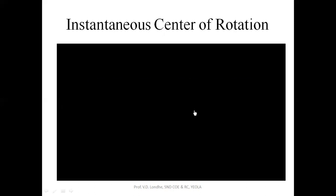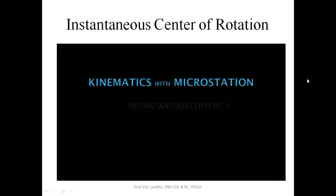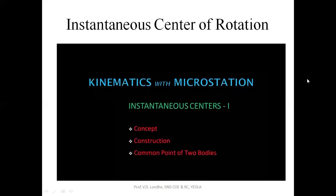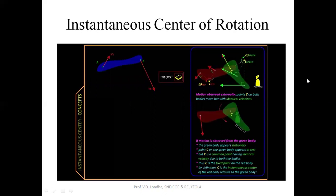Here we are going to learn a technique of velocity analysis called the instantaneous center method. This is based on the fact that the planar motion of a rigid body at any given instance can be modeled as a pure rotation. Like every rotation, this too will have its center or axis, but it might change or shift the next moment, and therefore it is called the instantaneous center.